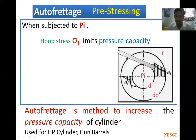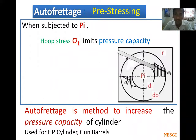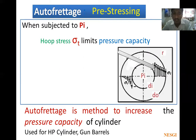At the inner surface, sigma r is equal to minus pi. Autofrettage — that is pre-stressing — is a method to increase the pressure capacity of cylinders. It is specifically used in high-pressure cylinders and gun barrels. Gun barrels should be thin and should have high pressure capacity. Wherever the pressure capacity requirement is high for small dimensions, this technique is used to increase the capacity of cylinders.